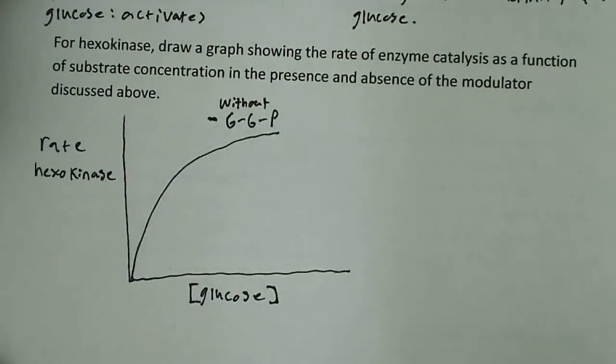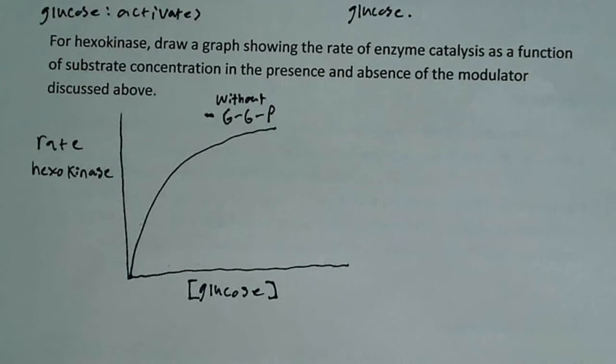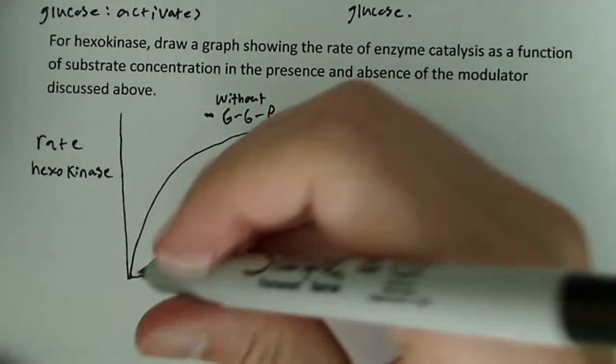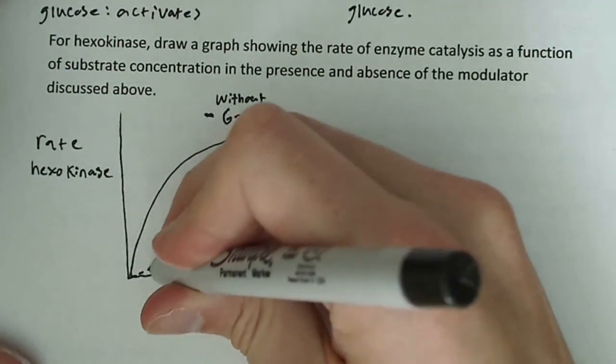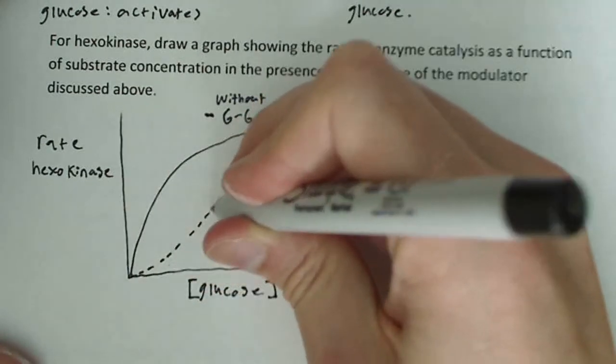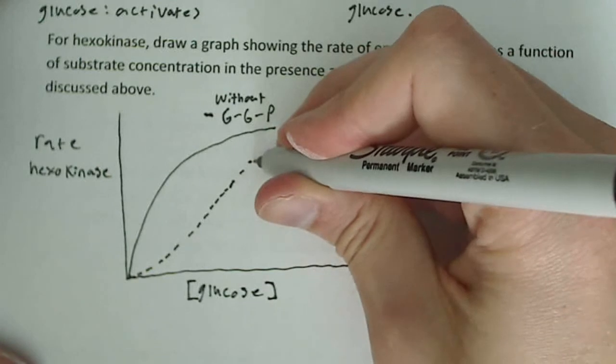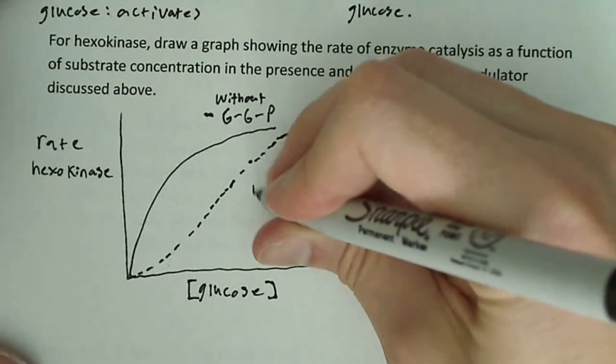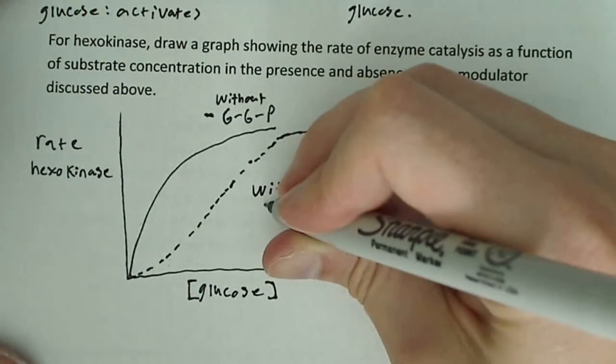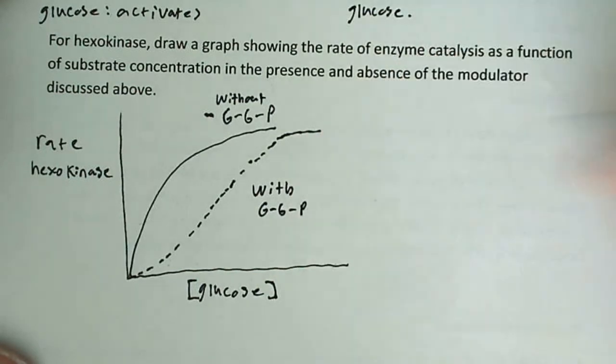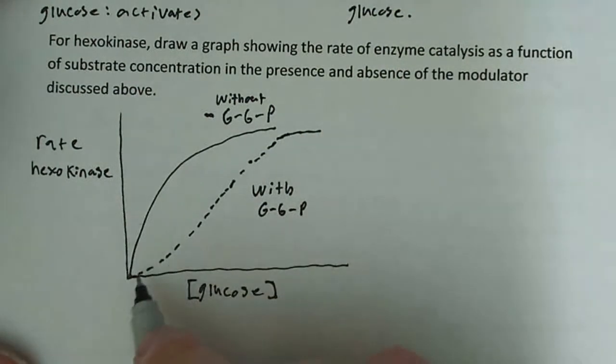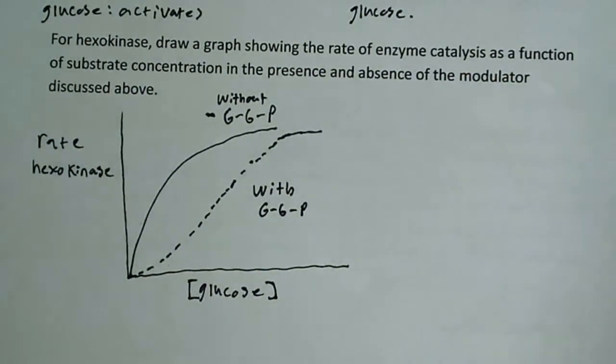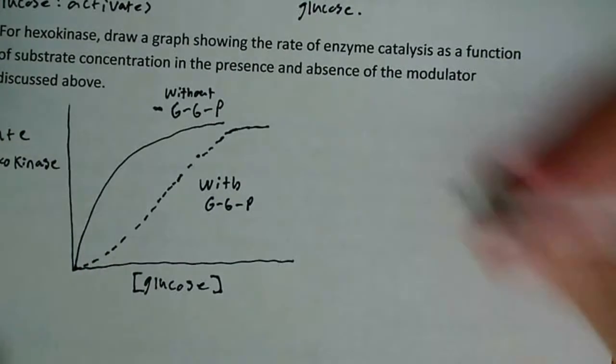Now, if I add, as my product builds up, as I get more and more glucose 6-phosphate, and maybe the pathway is not moving as efficiently as it should, there's a buildup of glucose 6-phosphate, what's going to happen? Well, essentially what's going to happen is this curve is going to basically level off. So this would be with glucose 6-phosphate. With glucose 6-phosphate, we're going to see that the curve is essentially going to level off. It's going to become more sigmoidal.